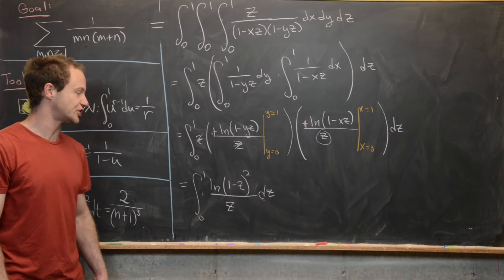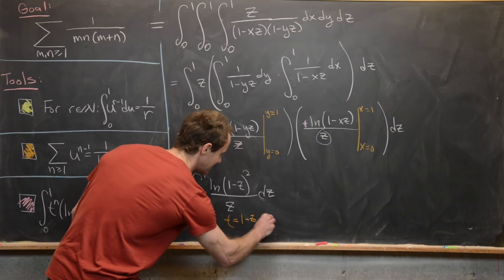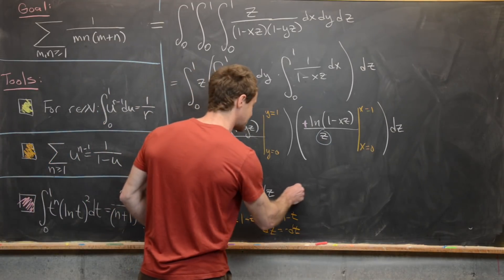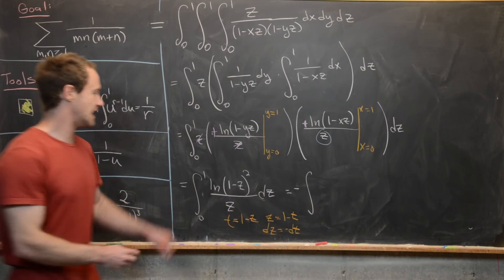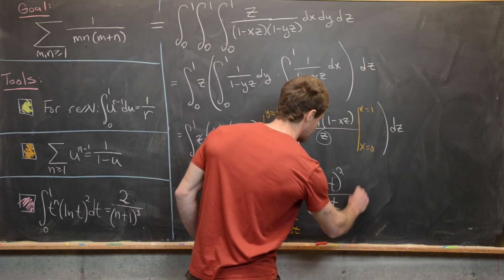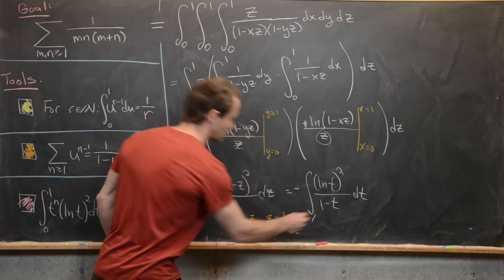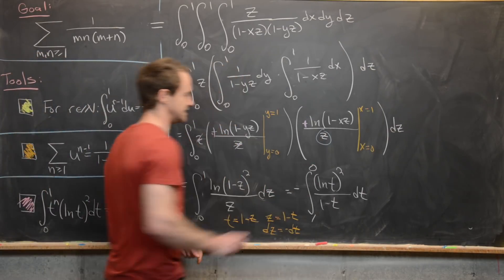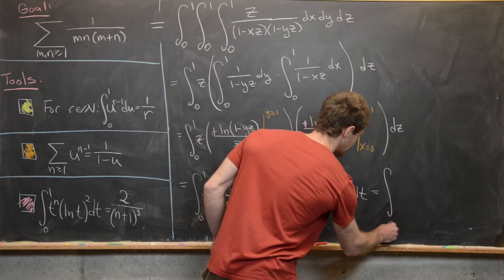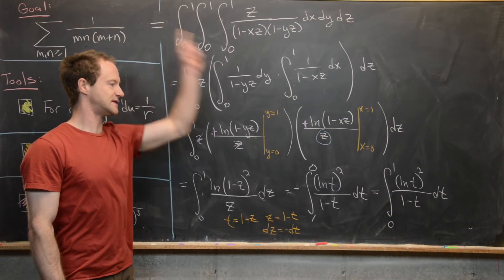We apply the substitution t equals 1 minus z, so z equals 1 minus t and dz equals minus dt. The bounds swap — when z equals 0, t equals 1; when z equals 1, t equals 0 — and switching the bounds removes the minus sign. This gives the integral from 0 to 1 of the natural log of t quantity squared over 1 minus t dt, reducing our double sum to this single integral.